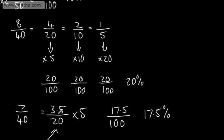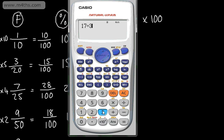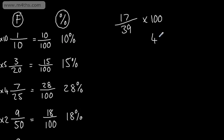Often it's slightly easier to use a calculator, and in some examples we are forced to. For example, if I got 17 out of 39 in a test, I'm looking at 39 and trying to find some way to make that a factor of 100 — and the answer is I can't. So to convert this to a percentage, I simply divide the two and multiply by 100. On the calculator, I do 17 divided by 39, which gives a decimal, then multiply by 100 to get a percentage. That gives us 43.6 to 1 decimal place — so 43.6%.